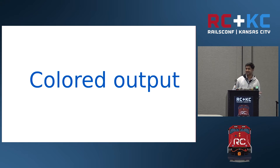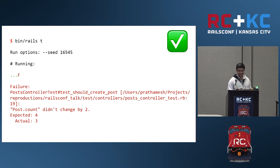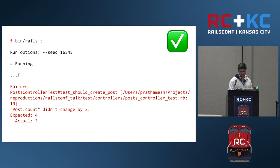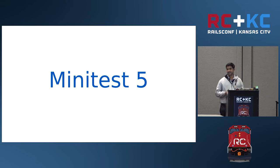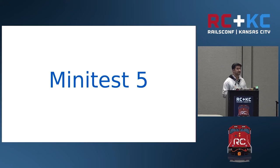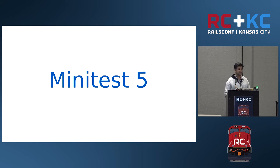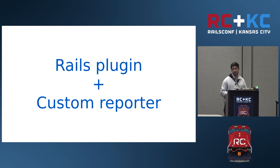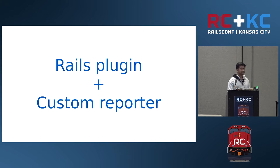Colored output — most wanted, right? That is also present and activated by default. When you run tests in Rails 5 using the new test runner, you will always get colored output without needing to pass a flag or configure a file. Rails test is actually powered by Minitest, and Minitest 5 has a plugin architecture which allows customizing the output. Rails 5 uses this capability to provide a custom reporter with colored output and all the other features, using the Minitest 5 plugin architecture.